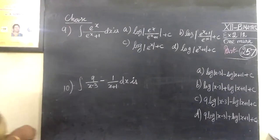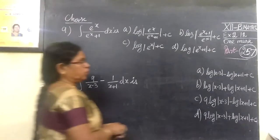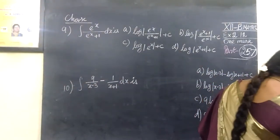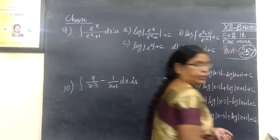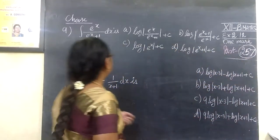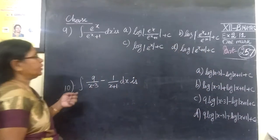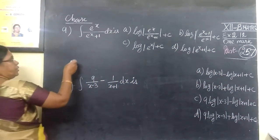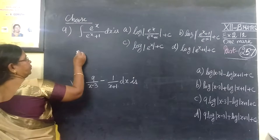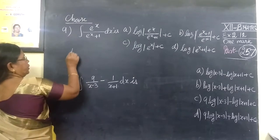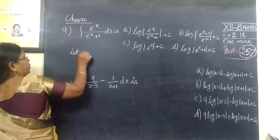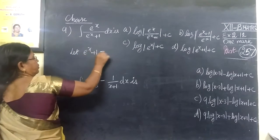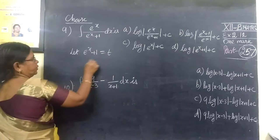So, the next one will be positive. Question 257. E power x divided by e power x plus 1. Number E can be done. If we let t equal to e power x plus 1, let's go.